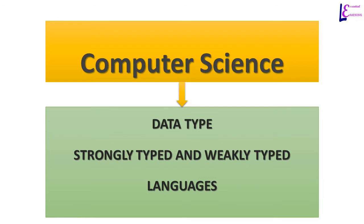In computers, a data type is the description of the set of values and the basic set of operations that can be performed or applied to values of a certain type. For example, different data types in Java are byte, short, int, long, float, double, boolean, and char.